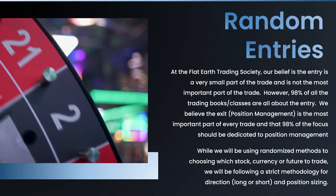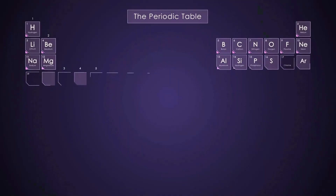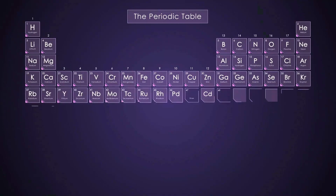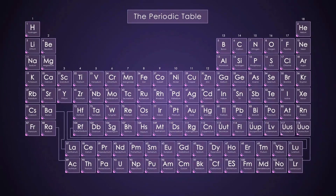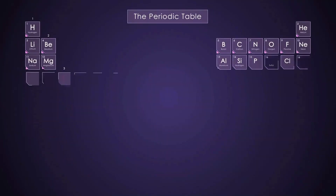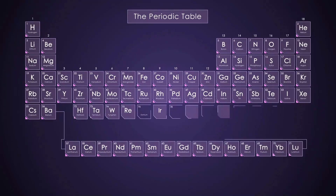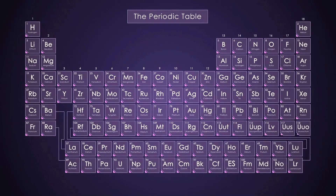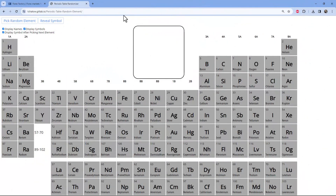We're just selling losers and holding winners. For trade number 79, I'm running a little low on ideas, but I thought about the periodic table of elements. I love science — I'm a science nerd. So I thought, let's use this to pick our symbols. Luckily, almost everything is available online already, including a random periodic table element chooser. Let's go to that website.